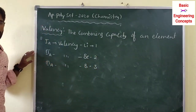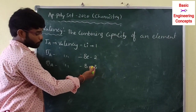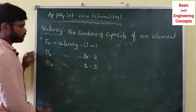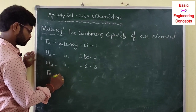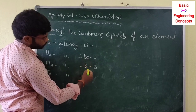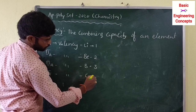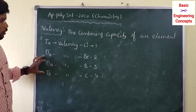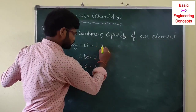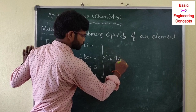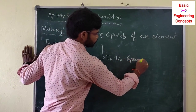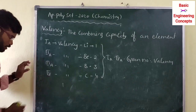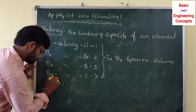Boron reacts with three other elements — that is why its valency is three. Group 4 valency is four — for example carbon has valency four. So up to Group 4, the group number equals the valency number.